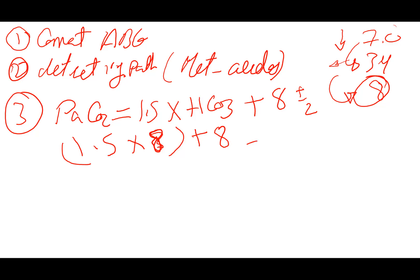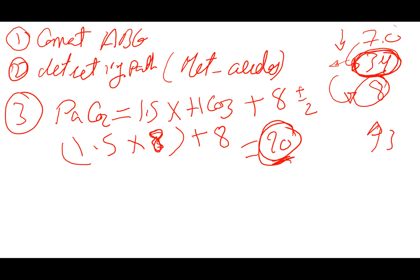The expected CO2 is 20 mmHg. However, the actual CO2 in the ABG is 34 mmHg — approximately 14 mmHg higher than expected. This means the patient has primary metabolic acidosis mixed with respiratory acidosis.